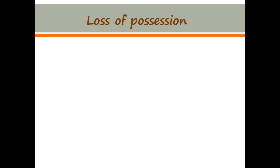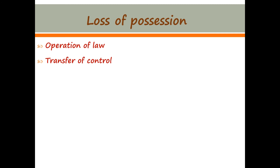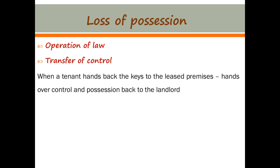Loss of possession — how is possession lost? By operation of law. Transfer of control: when there is transfer of control, possession is lost. For instance, when a tenant hands back the keys to a leased premise, he hands over control and possession back to the landlord. Possession is also lost when an object is destroyed or lost — for instance, when a cow dies, possession is lost.